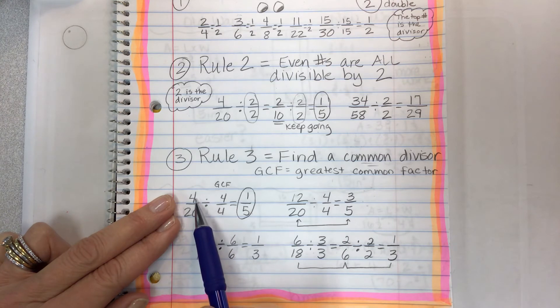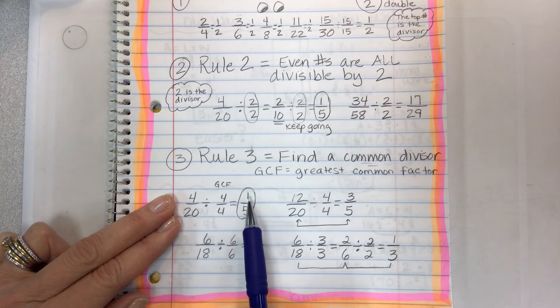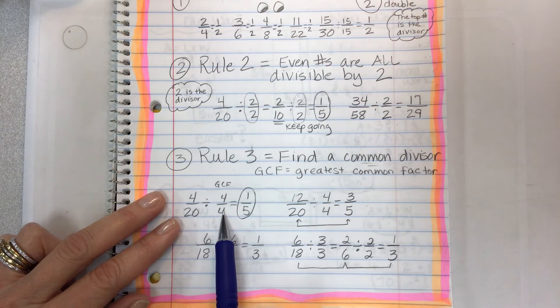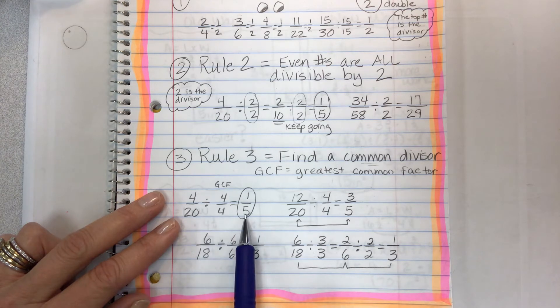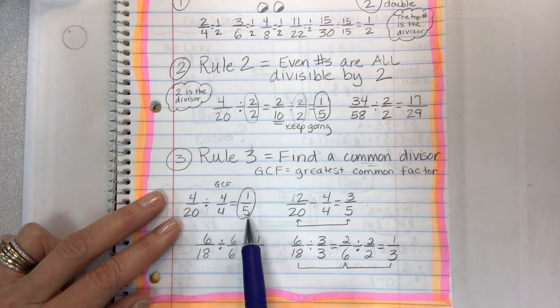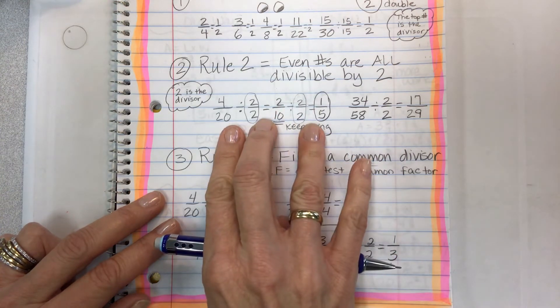So instead of using two, if I divide four by four, I get one. And instead of using two here, I have to use four on the bottom because what you use on the bottom, you use on the top and vice versa. 20 divided by four is five. And I got my equivalent fraction in one step instead of two steps.